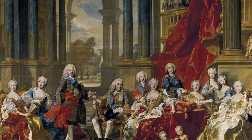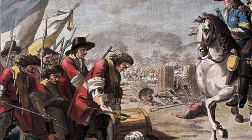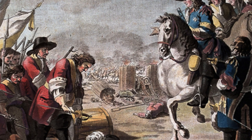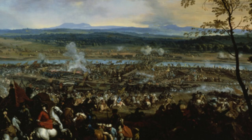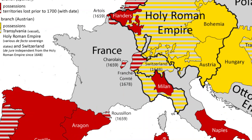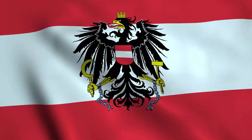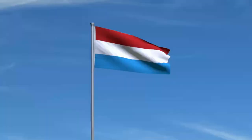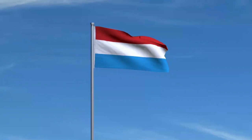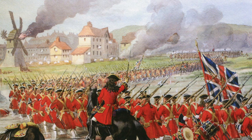Before the cannons roared and soldiers marched, there was a concerted effort to solve the succession crisis through diplomatic means. Treaties like the First and Second Partition Treaties were earnest attempts to distribute Spanish territories in such a way as to maintain European stability. However, these treaties were doomed by a web of conflicting national interests and deep-rooted mistrust among European powers. Austria was not willing to make concessions that would see Italy falling under French influence, while England and the Dutch Republic were preoccupied with checking French naval and commercial power. In the end, the collective inability to reach a diplomatic agreement signaled the exhaustion of peaceful options and set the stage for the inevitable conflict — the War of Spanish Succession.